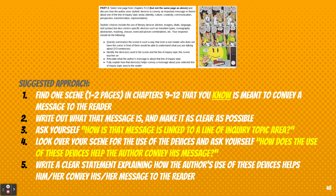For example: 'Alan Moore wants readers to understand that...' This is all informal at this point, so don't worry about using 'I' or 'me.' The third step is probably the most important — you have to ask yourself how that message is linked to a line of inquiry topic area. They're all listed for you in the directions: how is that message linked to identity or culture, creativity, communication, perspective, transformation, or representation?